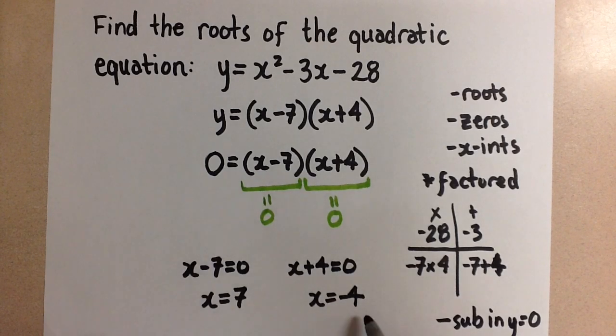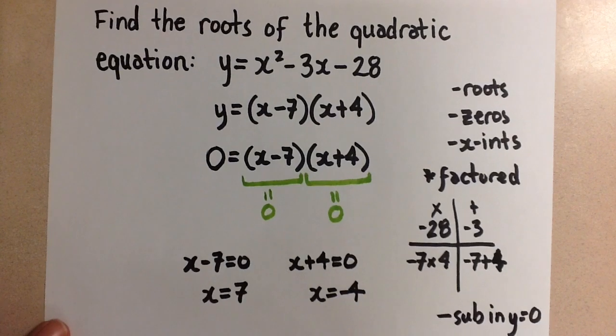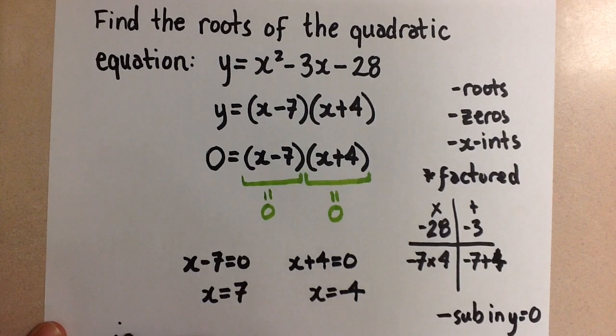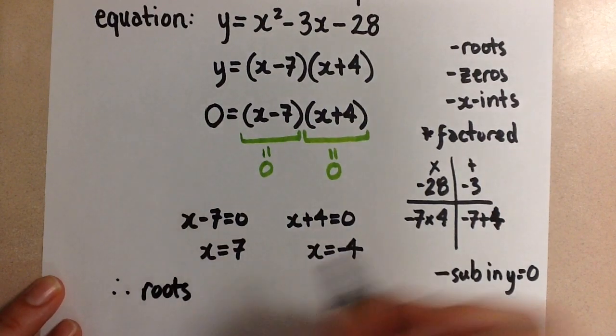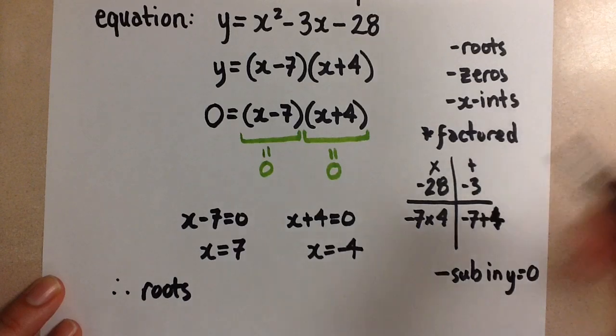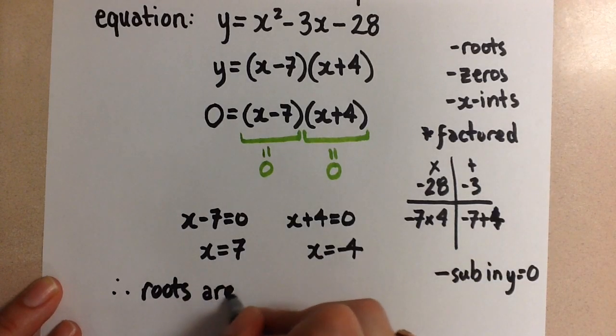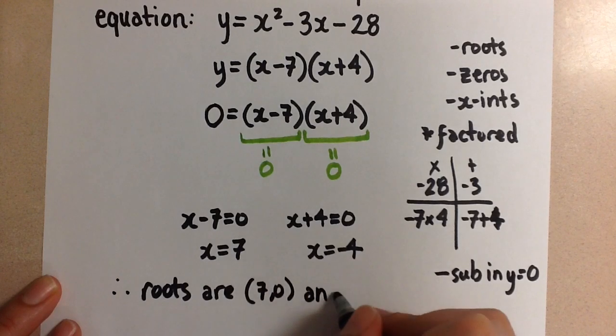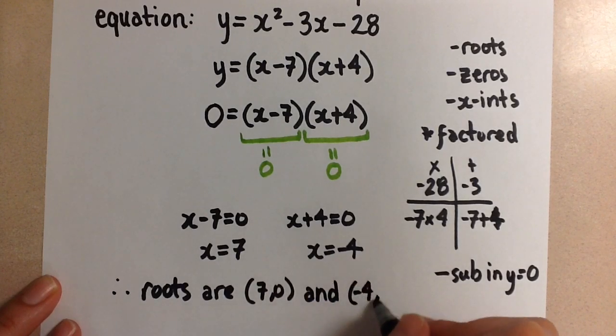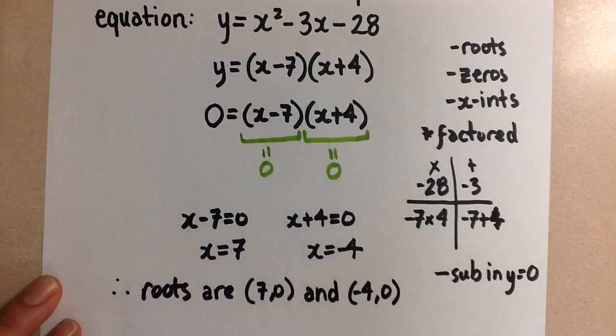So these are the two roots for this quadratic equation. We can write them as points and we get that our roots or zeros or x-intercepts are 7, 0 and negative 4, 0 for this parabola.